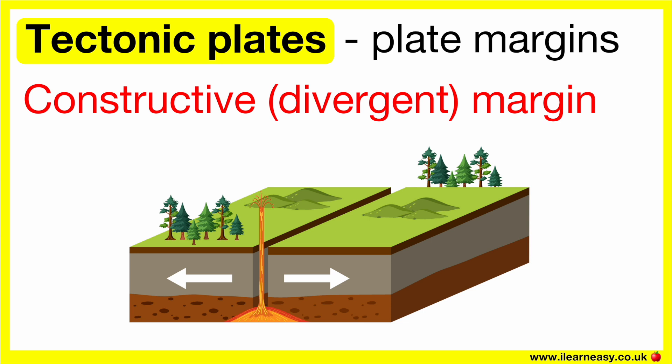Constructive plate margin, also known as divergent. This is when the plates move away from each other. This results in a gap in which the magma seeps through, cools down and forms geological features such as volcanoes.